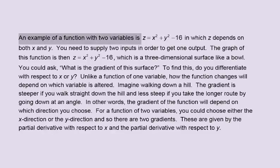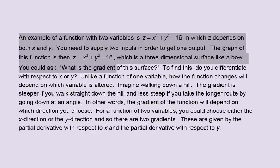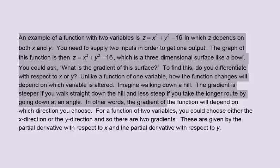An example of a function with two variables is z equals x squared plus y squared minus 16, in which z depends on both x and y. You need to supply two inputs to get one output. The graph is a three-dimensional surface like a bowl. You could ask: what is the gradient of this surface? Unlike a function of one variable, how the function changes depends on which variable is altered. Imagine walking down a hill — the gradient is steeper straight down, less steep at an angle. For a function of two variables, you could choose the x or y direction, giving two gradients.